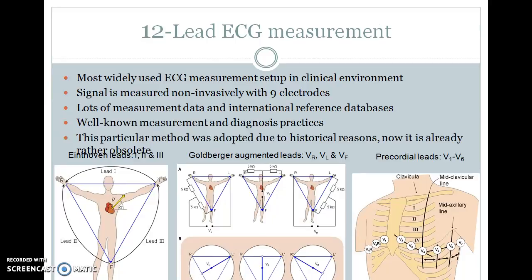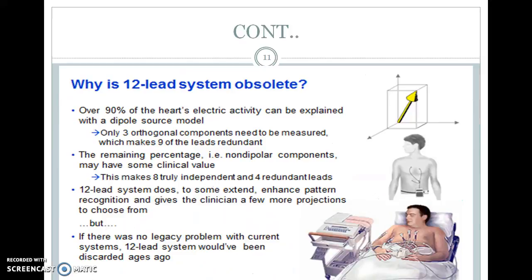The 12-lead ECG measurement is the most widely used ECG measurement setup in a clinical environment. The signal can be measured non-invasively with 9 electrodes using the Einthoven triangle. Einthoven leads use two electrodes, and the final output is taken as the difference in electric potential between these electrodes. About 90% of heart electric activity can be explained with the dipole source model. The 12-lead system provides enhanced pattern recognition and gives the clinician more projections to choose from.